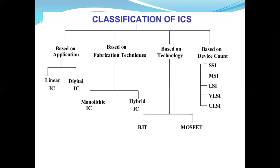Next, the classification of ICs: based on application, ICs are classified as linear ICs and digital ICs — in this subject we concentrate mainly on linear ICs. Based on fabrication technique, ICs are classified as monolithic ICs and hybrid ICs. Based on the transistor technology, ICs are classified as BJT-based and MOSFET-based. Based on device count, that is the number of active elements, ICs are classified as five types: SSI, MSI, LSI, VLSI, and ULSI. This classification will be discussed in later sessions.